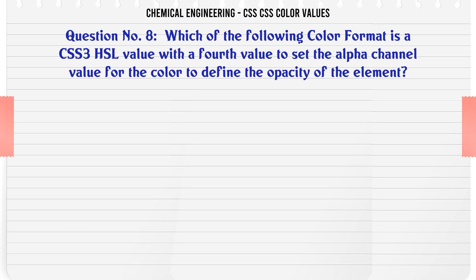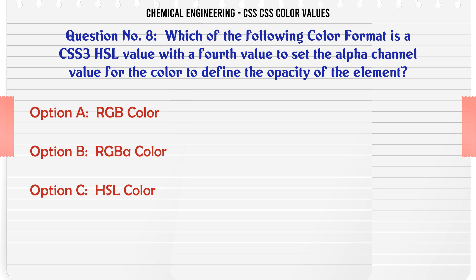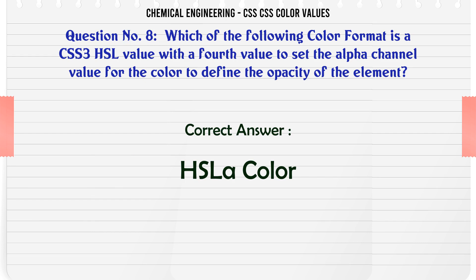Which of the following color formats is a CSS3 HSL value with a fourth value to set the alpha channel value for the color to define the opacity of the element? A: RGB color. B: RGBA color. C: HSL color. D: HSLA color. The correct answer is: HSLA color.